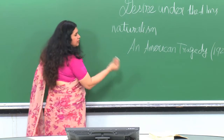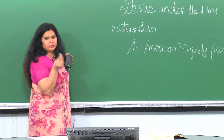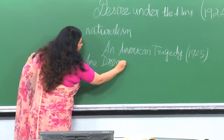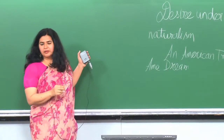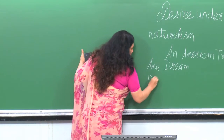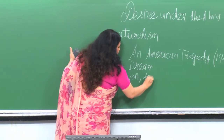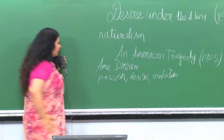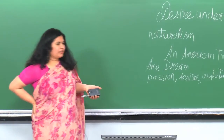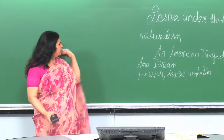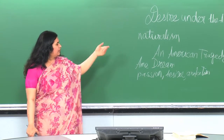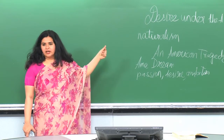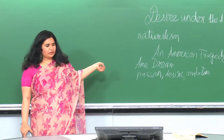An American Tragedy is a story driven by the American dream — passion, desire, and ambition. These are the defining themes. Although one is a drama and one is a novel, you will find several features overlapping. It is a good exercise to compare the two texts even though they belong to different genres.